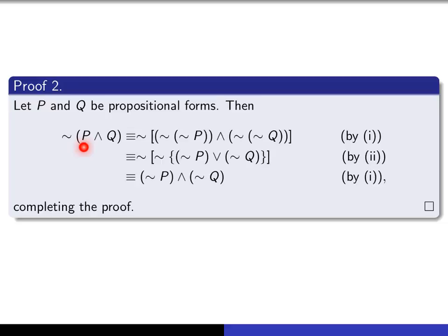So, all I've done is I've copied it down again, but wherever I see a P, I put tilde tilde P and where I see a Q, I put tilde tilde Q.